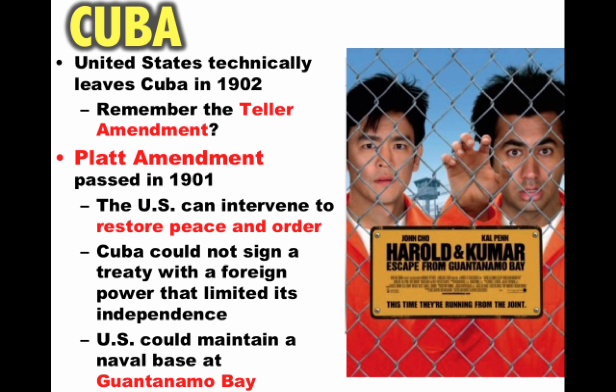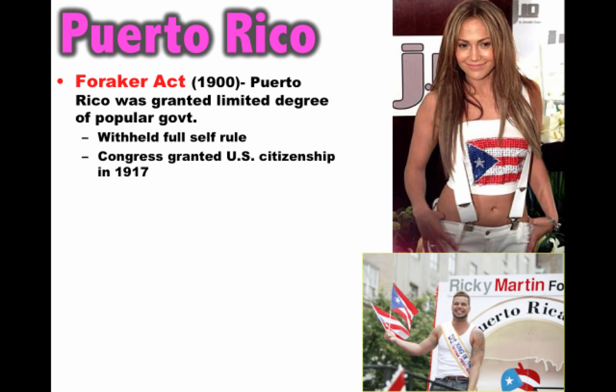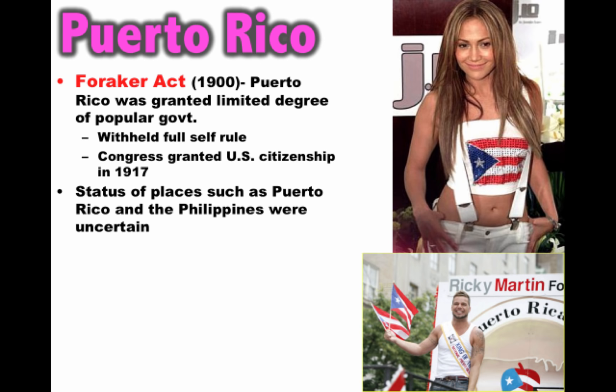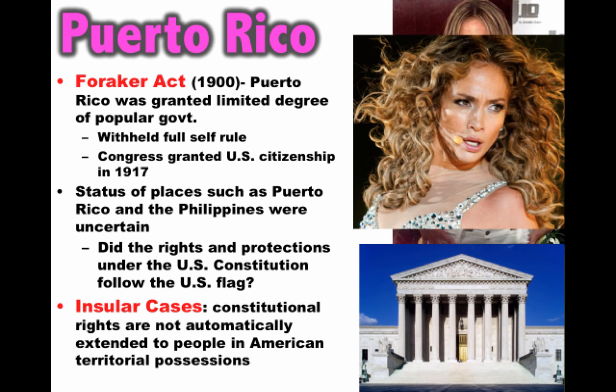Puerto Rico also had restrictions on its freedom — it was granted a limited degree of popular government but withheld full self-rule. Puerto Rico was not going to get complete independence. Congress did grant U.S. citizenship to people in Puerto Rico in 1917. But the status of Puerto Rico and the Philippines remained uncertain — the key question being whether constitutional rights and protections followed the U.S. flag. In the insular cases, the Supreme Court decided that constitutional rights are not automatically extended to people in American territorial possessions.